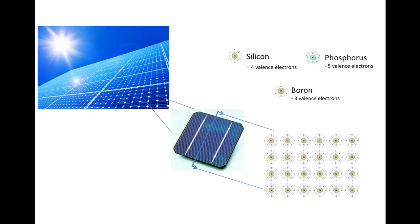Phosphorus and boron. Phosphorus with five valence electrons is going to go on the upper surface of that crystal. Boron with three valence electrons is going to go on the lower surface.